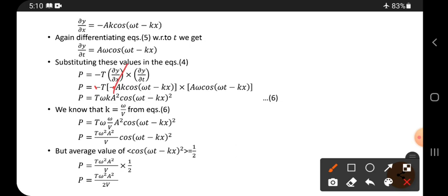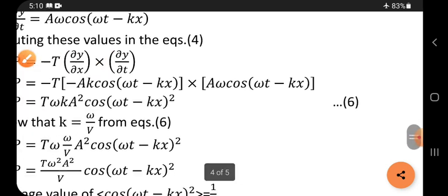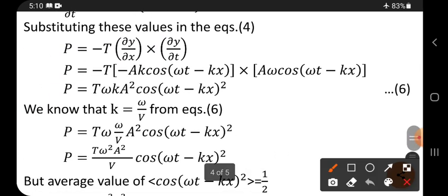Now A into A is A². Here omega and k, ωk. A into A is A². Minus minus plus, T as it is. Here what you have: omega into k is ωk. Cos into cos is cos².